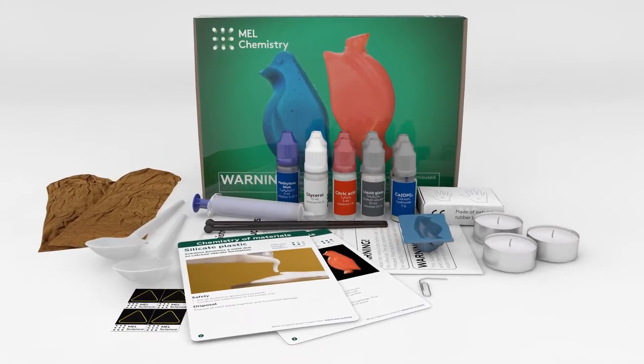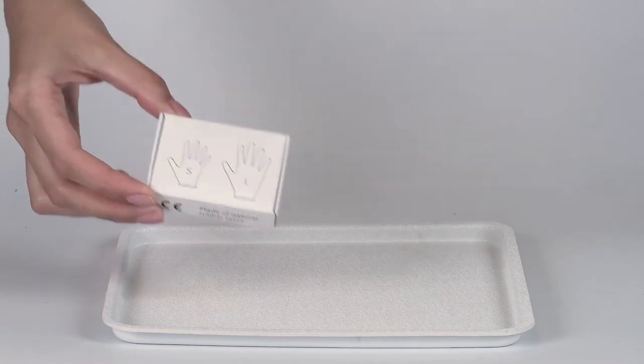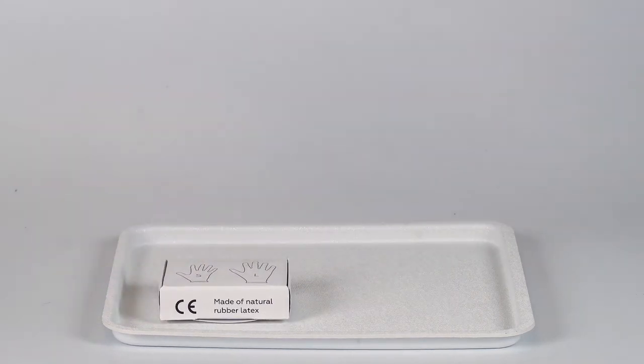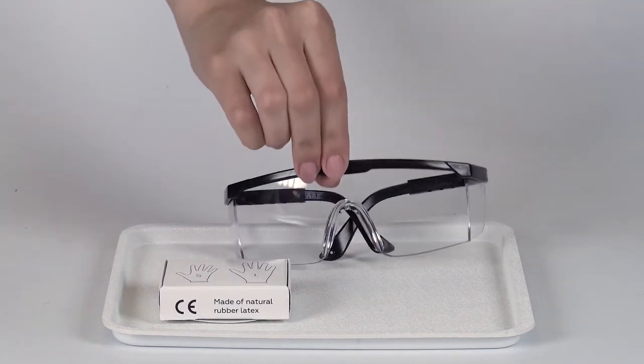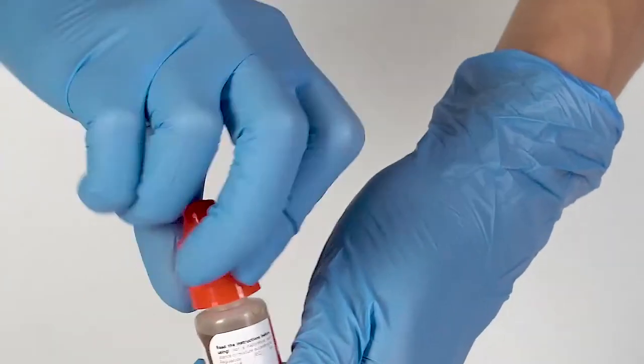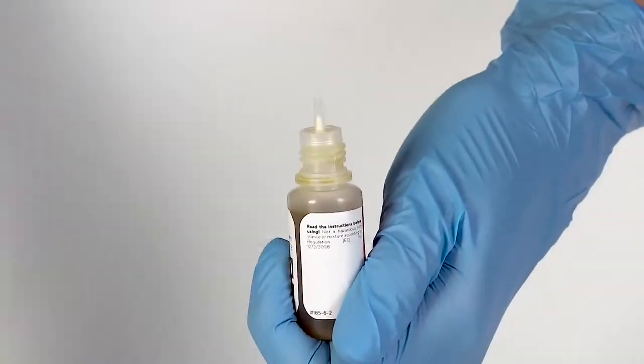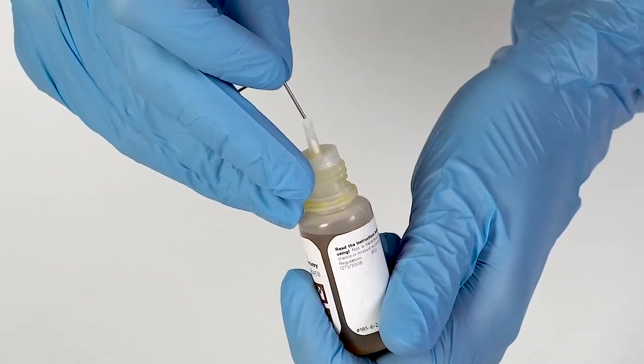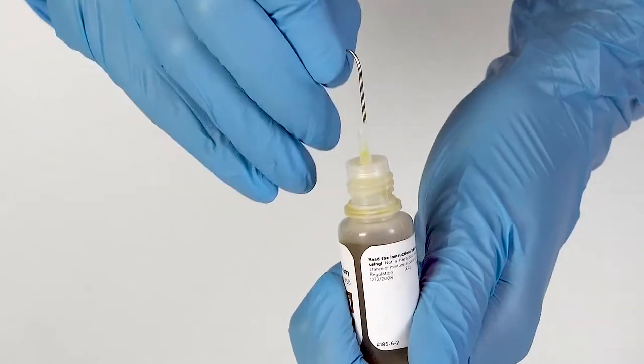Perform this experiment on a plastic tray to contain any possible spills. Don't forget to put on protective gloves and goggles before doing the experiment. To open a bottle containing a reagent, push the cap down and turn it. Pierce the bottle nozzle with an unbent paper clip.